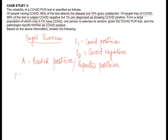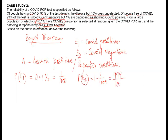Now what is the probability of E1? Only 0.1% have COVID, that means this is 0.1% or 1 by 1000. And if these are the COVID positive, then what will be the COVID negative? This will be 1 minus 1 by 1000, which is 999 by 1000. So we have P(E1) and P(E2).